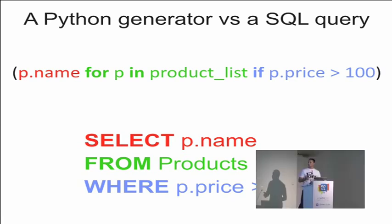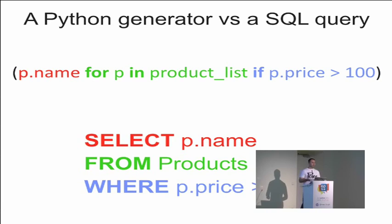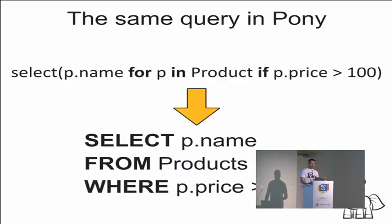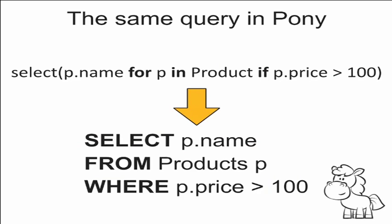Imagine how cool it would be if we used generators for writing database queries — this is exactly what Pony does. The select function provided by Pony receives a generator as a parameter, but it doesn't execute it. Instead, Pony gets the generator bytecode, translates it into SQL, then sends this query to the database, and creates objects in memory based on the query result. This function returns a list of objects. The Product is a class declared earlier in the code — it represents the product entity and is mapped to a corresponding database table.